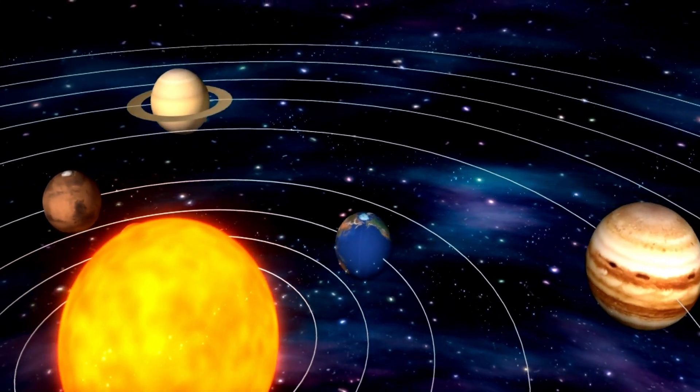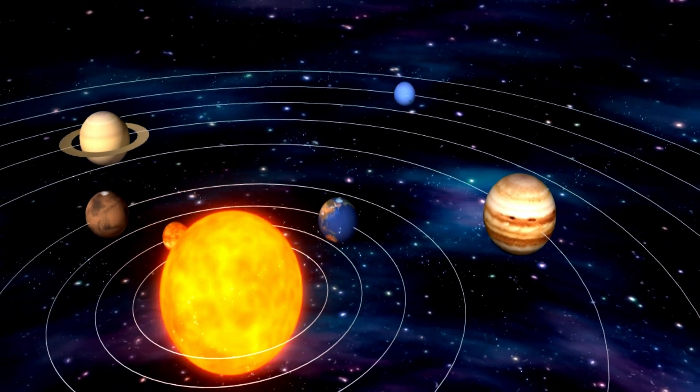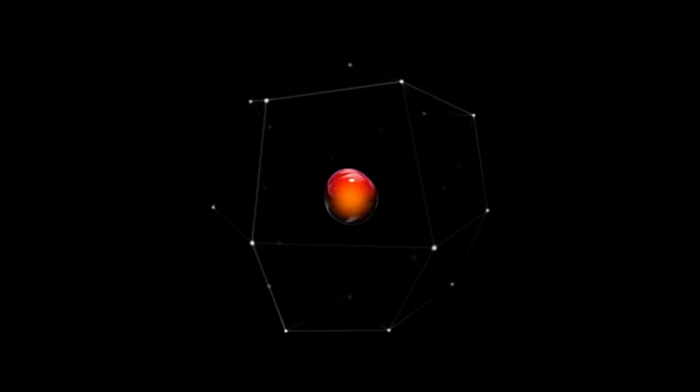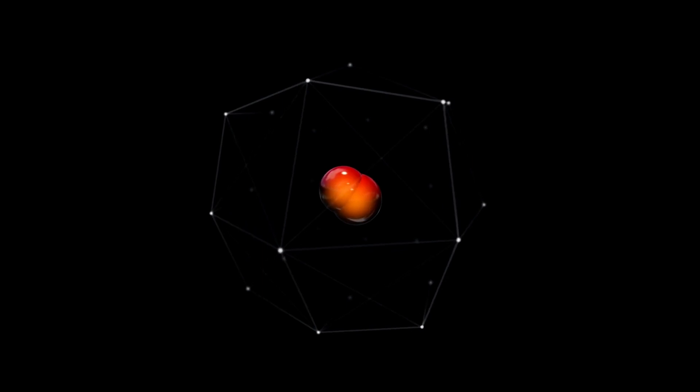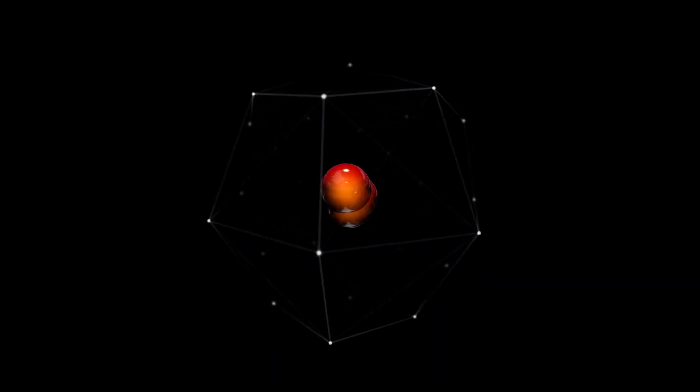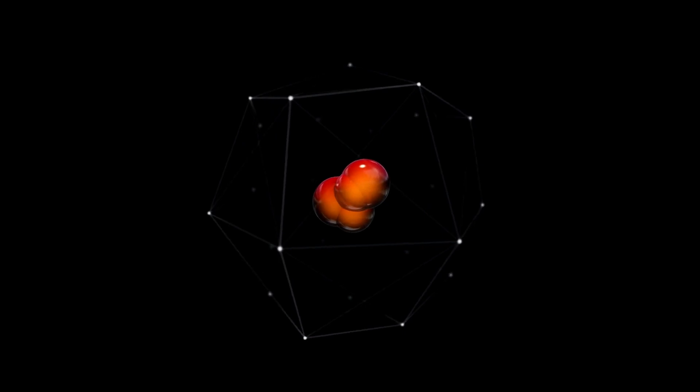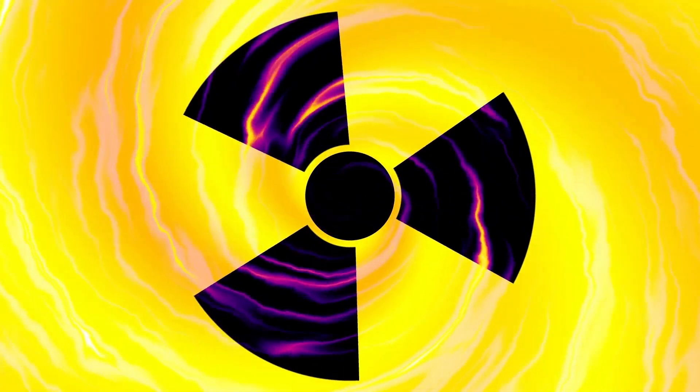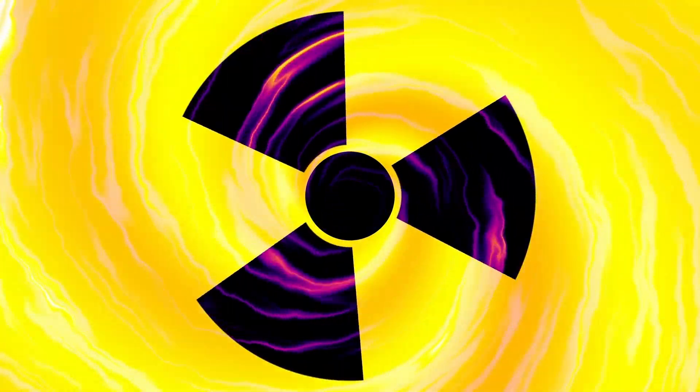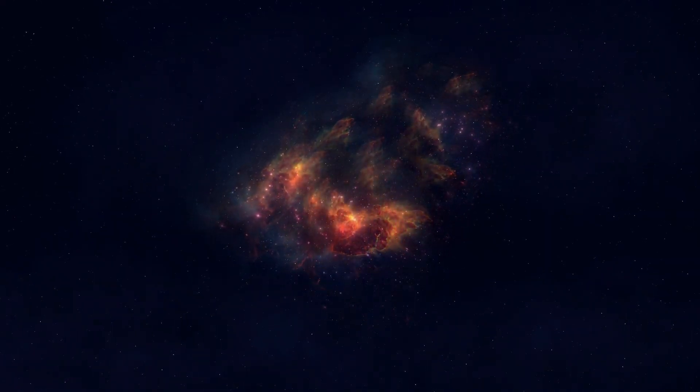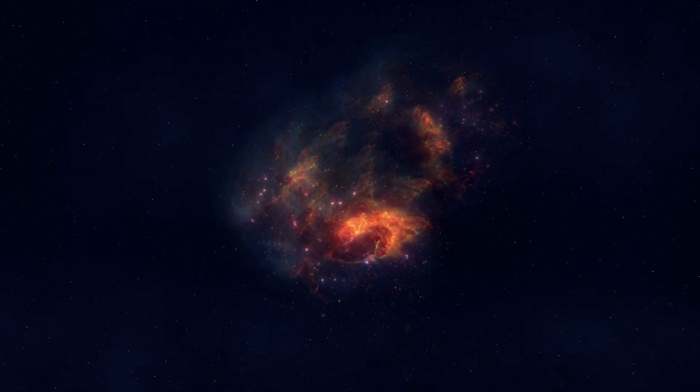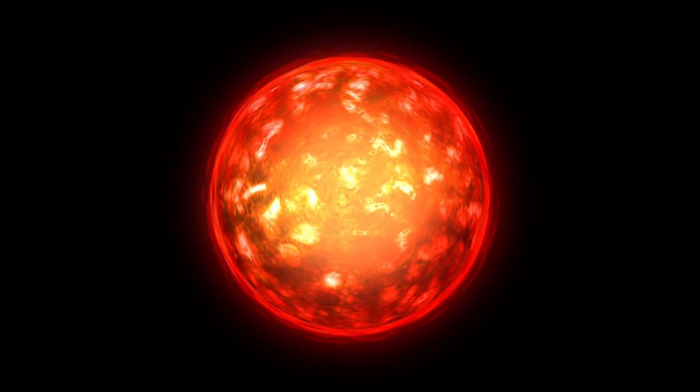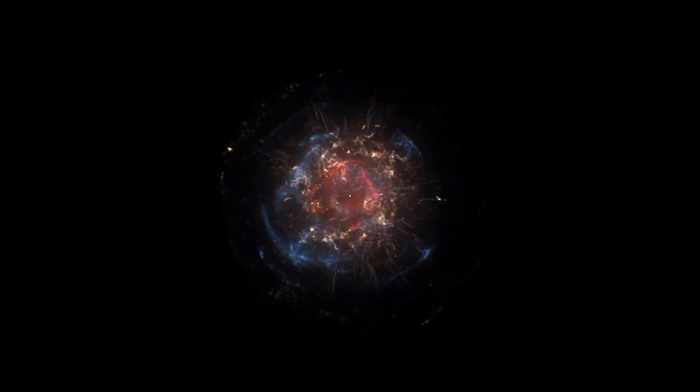As Betelgeuse continues to approach the end of its life, the interplay between gravity and radiation pressure will remain a defining feature of its behavior. The eventual exhaustion of its nuclear fuel will tip the balance of its existence decisively in favor of gravity, leading to the star's catastrophic collapse and a subsequent supernova explosion. This dramatic finale will mark the end of Betelgeuse's life as a red supergiant, scattering newly formed elements into space and contributing to the cosmic cycle of matter and energy that shapes the universe.